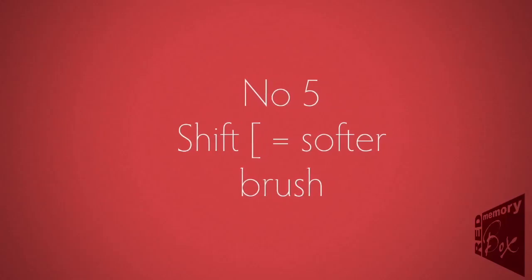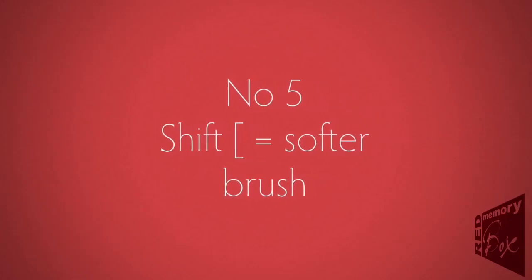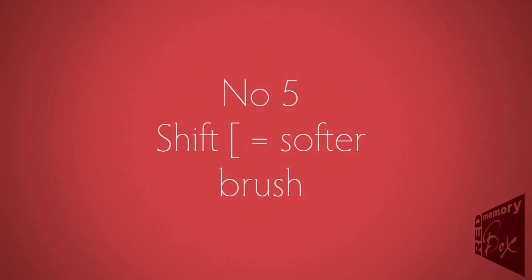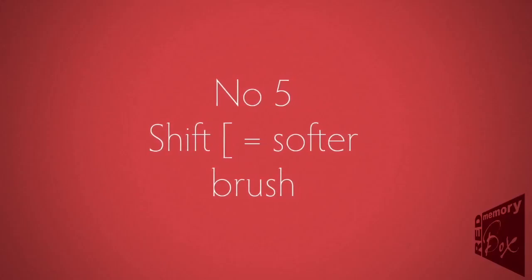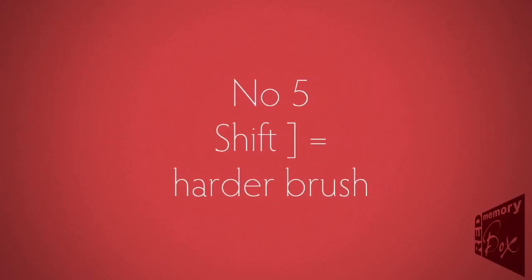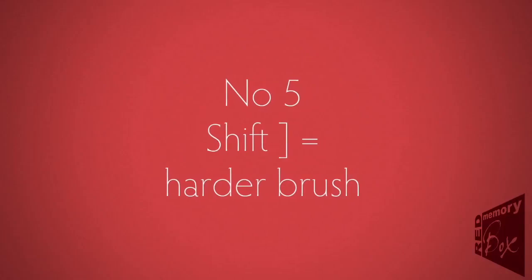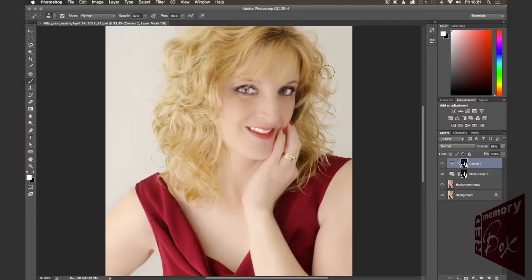Tip number five, we are nearly halfway there. Shift and the left square bracket makes your brush softer. Shift and the right square bracket makes it harder. Just hold down the Shift key and press the left or the right square bracket to make the brush harder or softer.